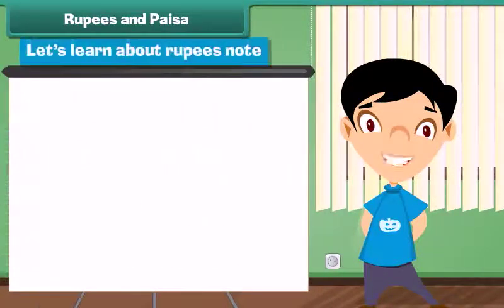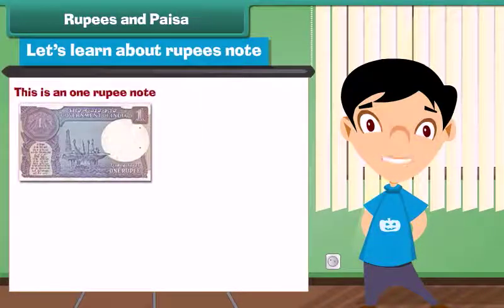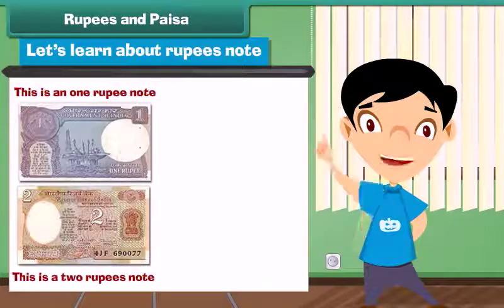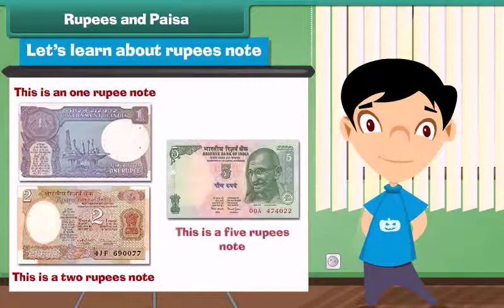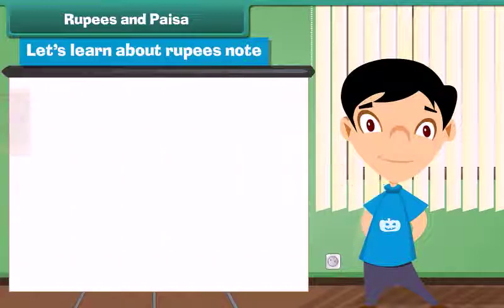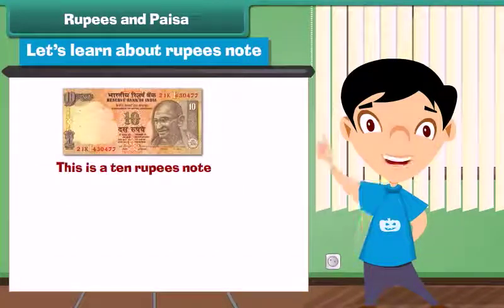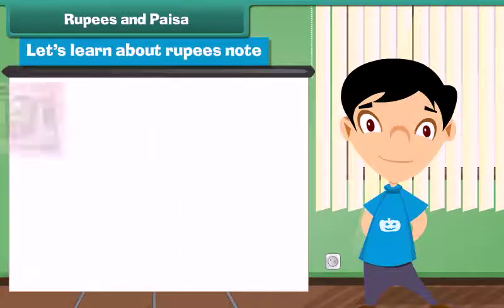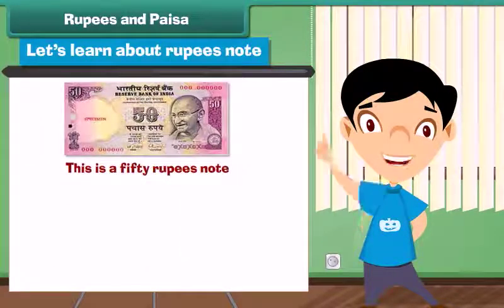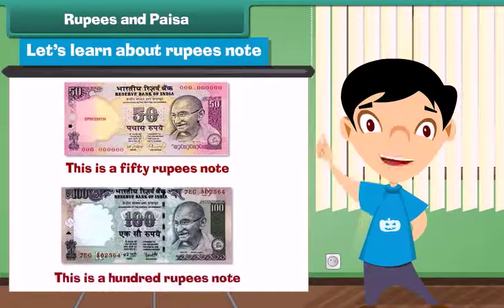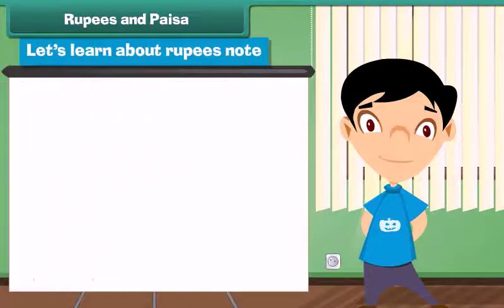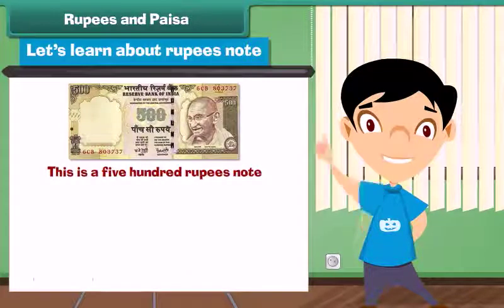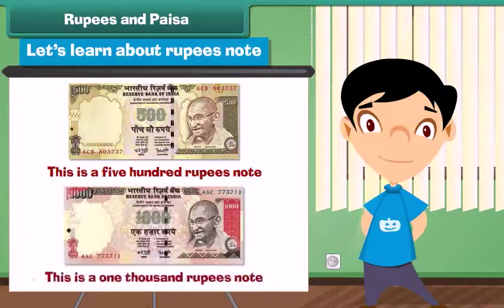This is a 10 rupees coin. Let's learn about rupee notes. This is a 1 rupee note. This is a 2 rupees note. This is a 5 rupees note. This is a 10 rupees note. This is a 20 rupees note. This is a 100 rupees note. This is a 500 rupees note. And this is a 1,000 rupees note.